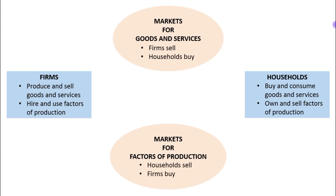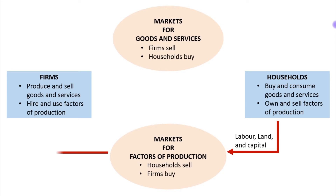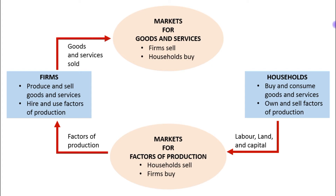In the markets for factors of production, households are sellers and firms are buyers. The households sell the use of their labor, land, and capital to the firms in the markets for the factors of production. The firms then use these factors to produce goods and services, which in turn are sold to households in the market for goods and services.